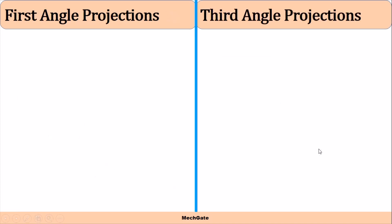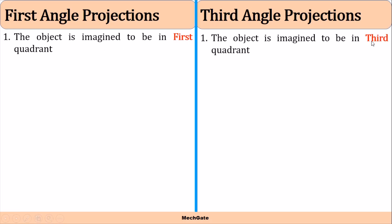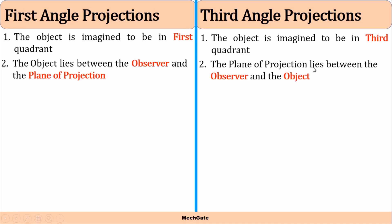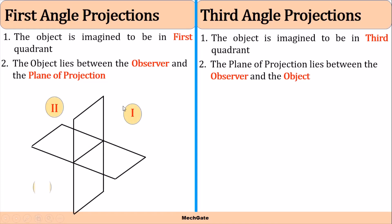The difference between first angle projection and third angle projection: in first angle projection, the object is imagined to be in the first quadrant, while in third angle projection, the object is imagined to be in the third quadrant. The object lies between the observer and the plane of projection in first angle projection, while the plane of projection lies between the observer and the object in third angle. If the observer is observing from this side, this would be the first quadrant, behind that the second quadrant, below that the third quadrant, and in front of the third quadrant the fourth quadrant.